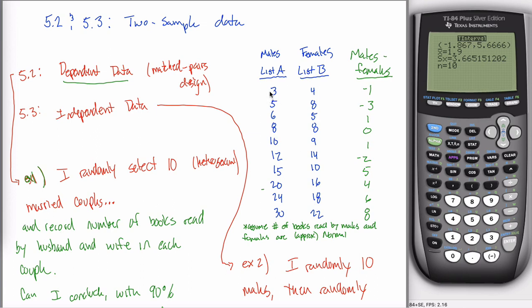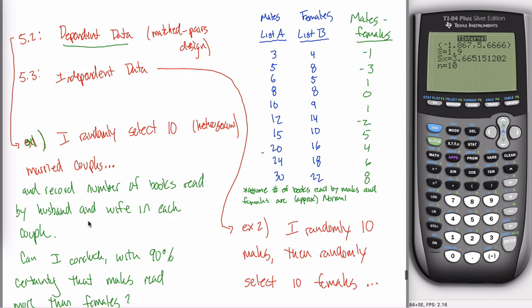In the previous examples, these males and females were connected in some sense. I think I said that they were married couples. So I randomly selected 10 married couples and kept track of the husband and the wife and how much they read. And what I want to do now is I want to kind of change this scenario. So instead of thinking about these as having a connection, instead of thinking about this as being dependent data, I want to deal with independent data.